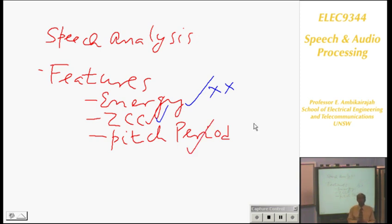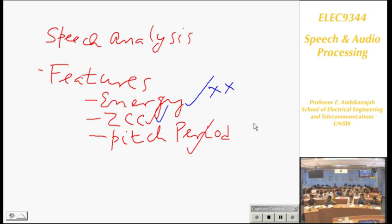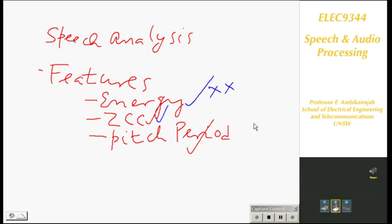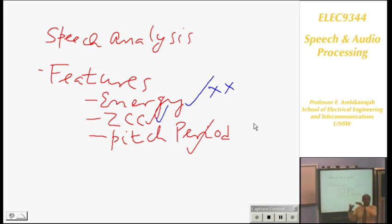What else did we do in Chapter 2? In the lab last week, you took the speech signal, windowed it, and took the short-time Fourier transform. From the magnitude response, you were able to find the formants of voiced speech. For voiced speech, the formants are in the low frequency region, and for unvoiced sound, they are in the high frequency region.